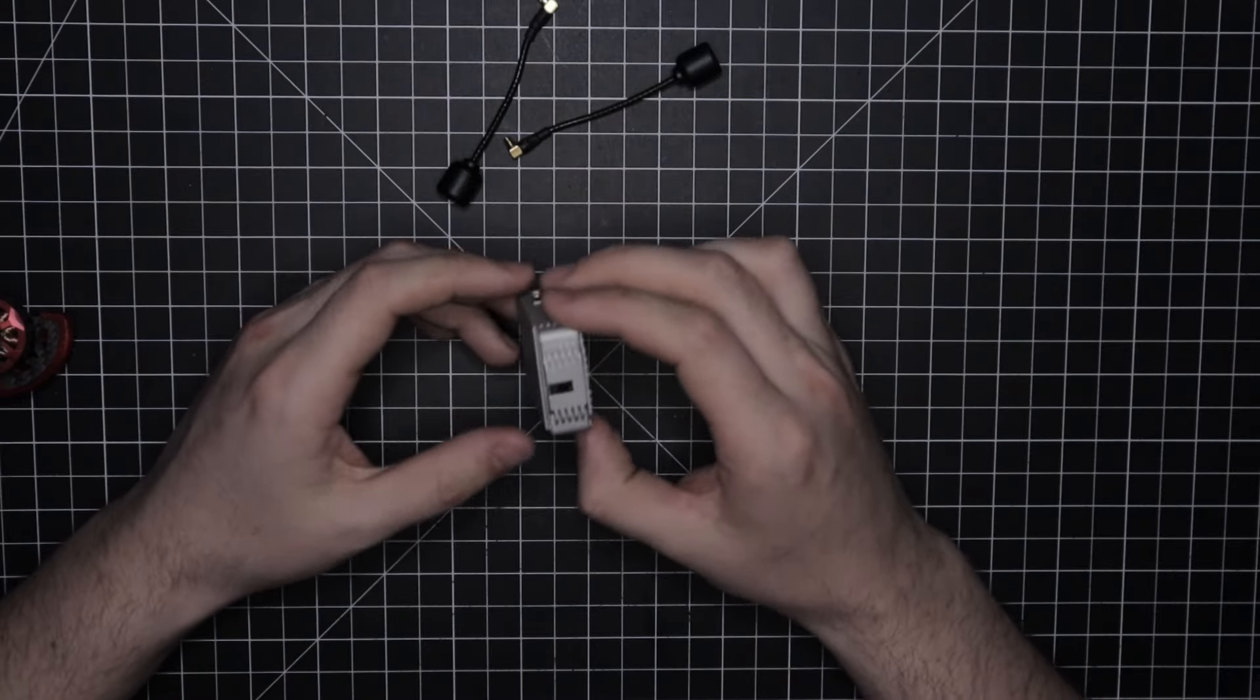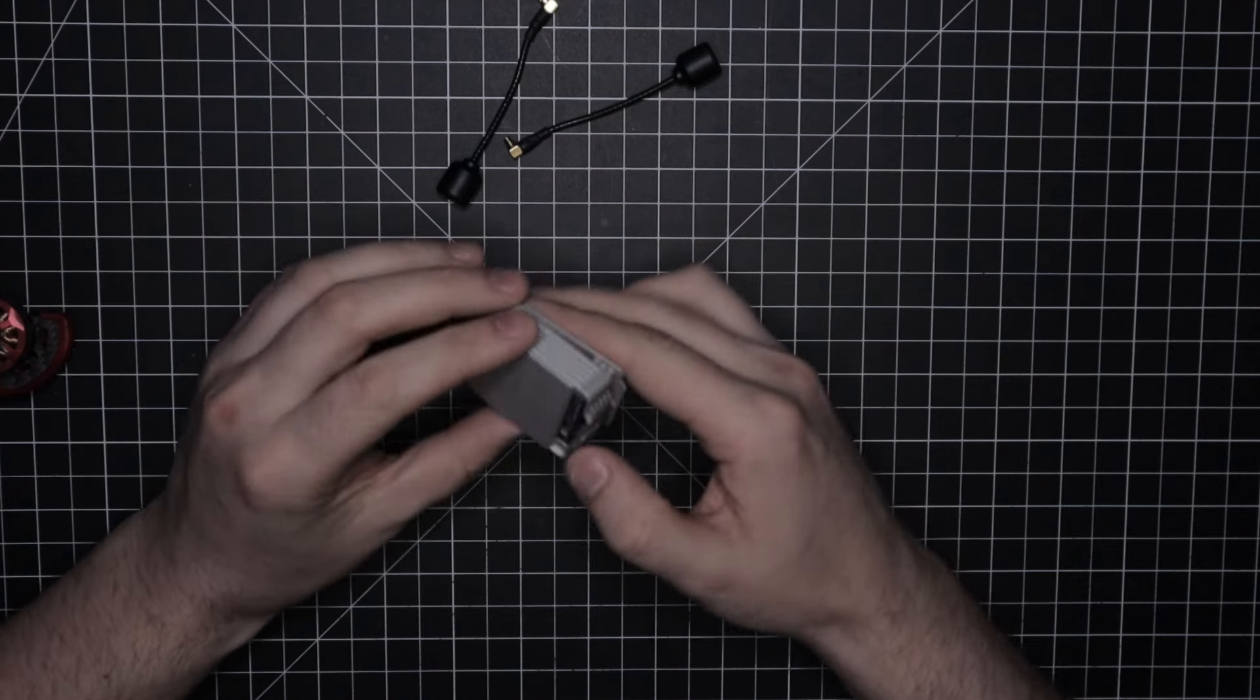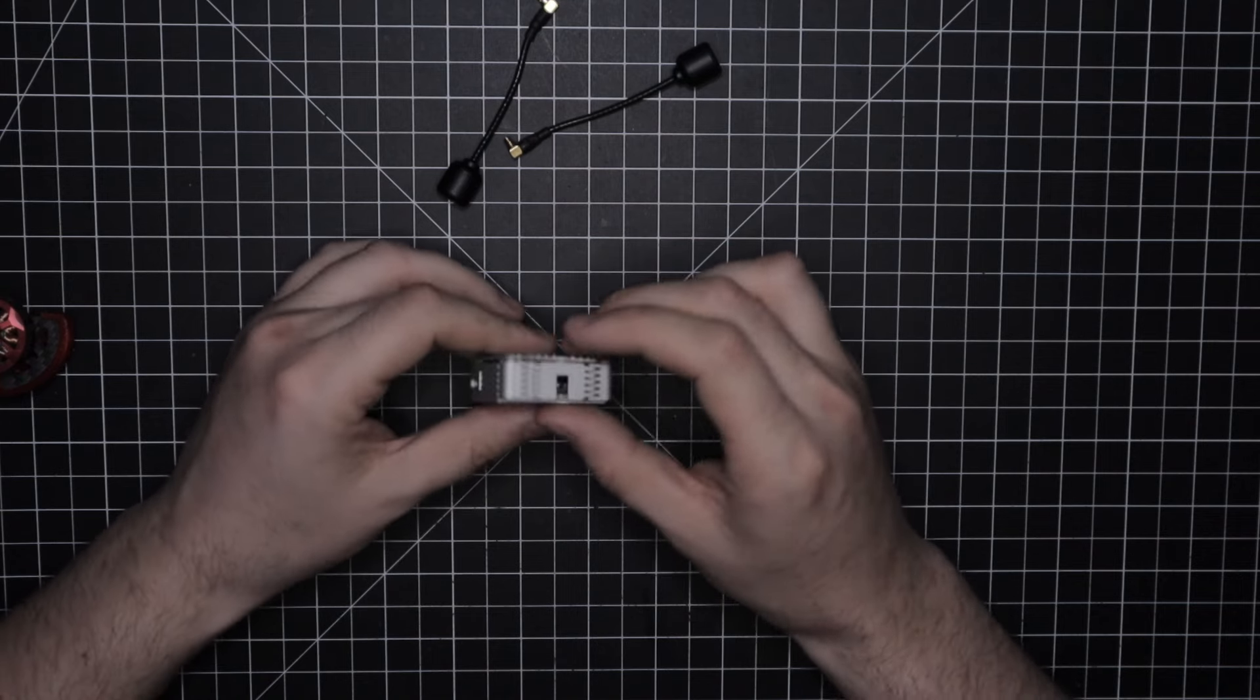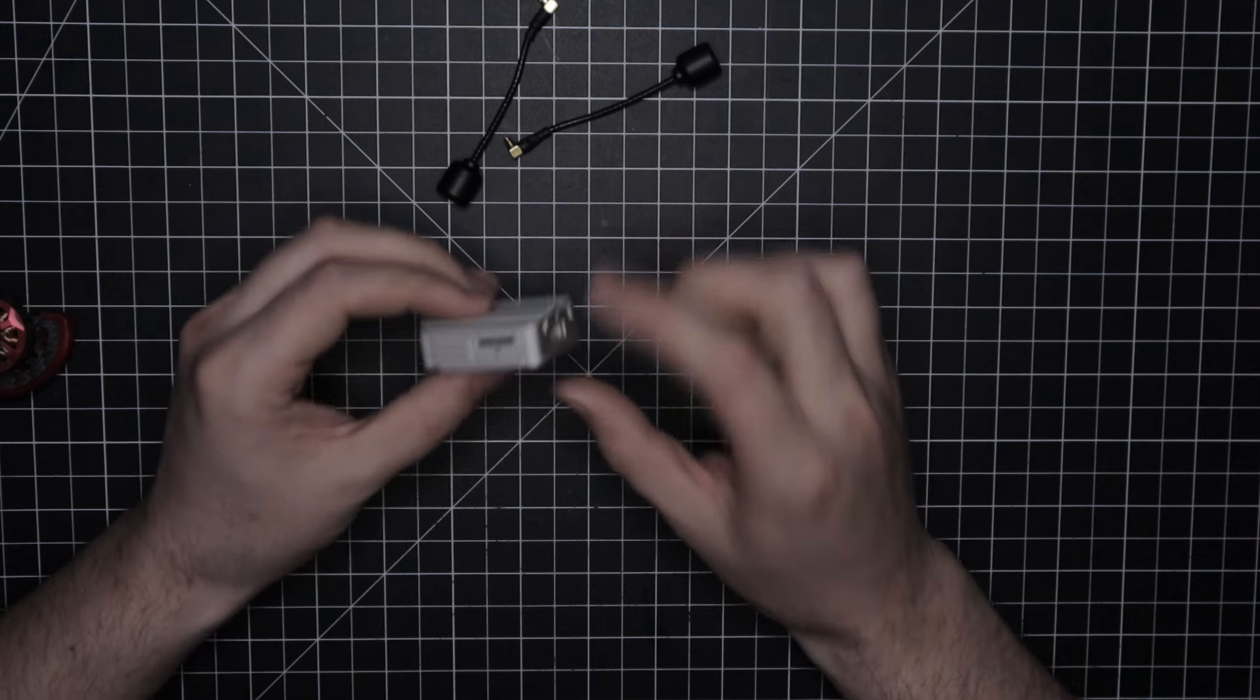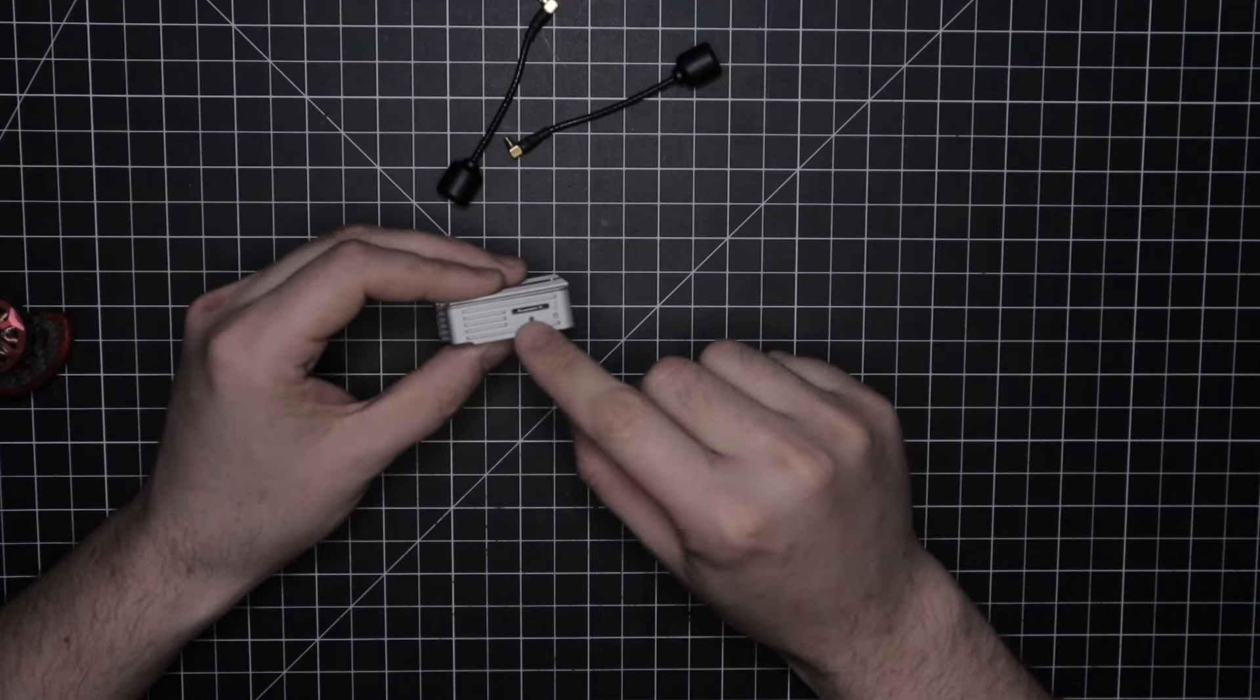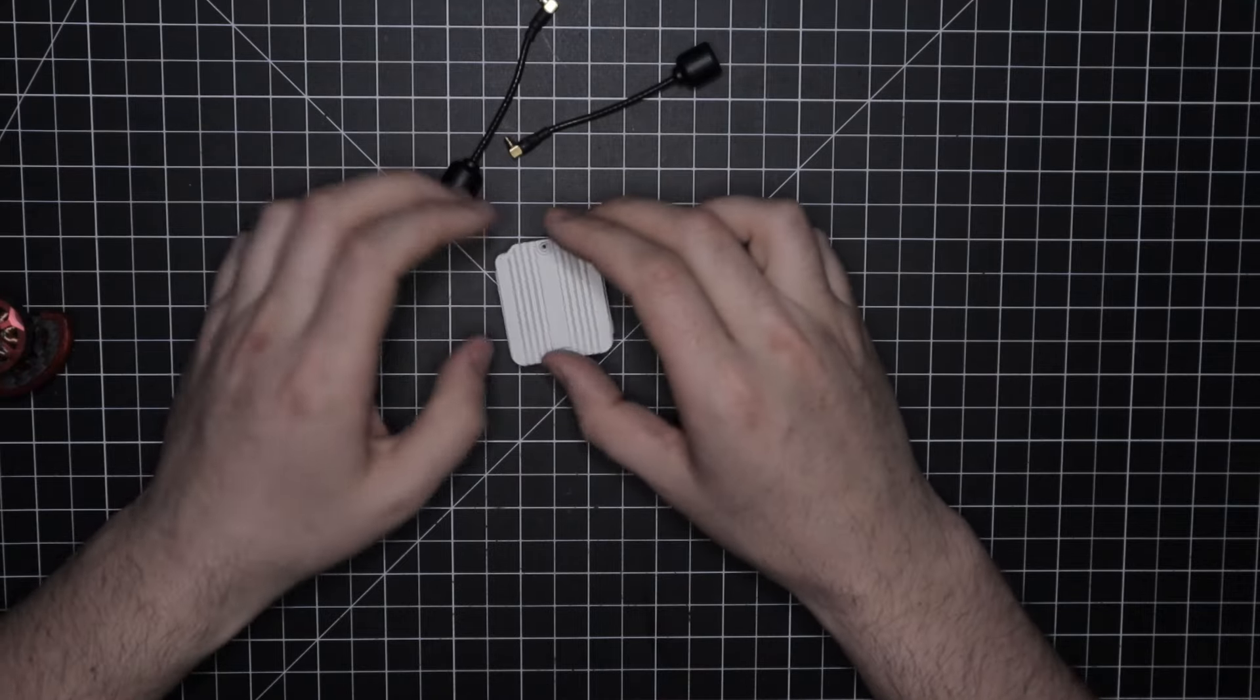All right, so check this out. I couldn't bind this thing to my goggles and everything looked right. I checked the connection for the flight controller. I checked the camera. Everything was good. The air unit was powering up. I had a green light here. When I went to bind it was red, so everything seemed like it was working right, but I still couldn't get it to bind.